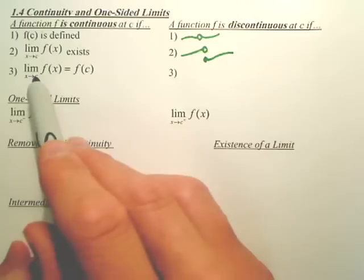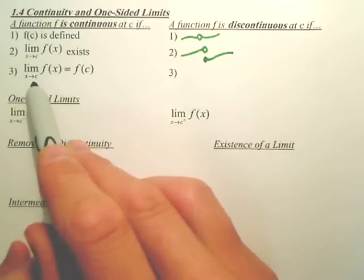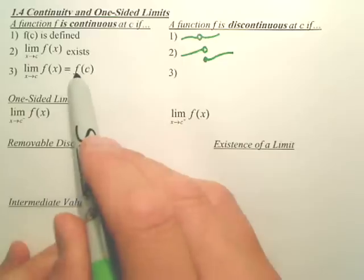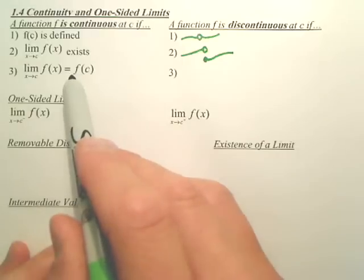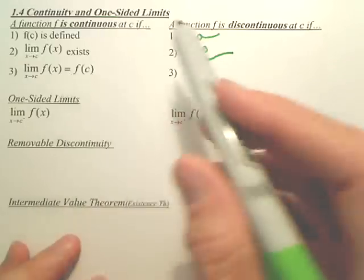The third stipulation for it to be continuous is that the limit as X approaches C is equal to the actual value, meaning this.